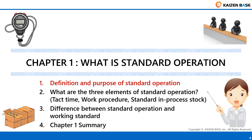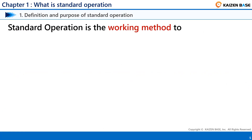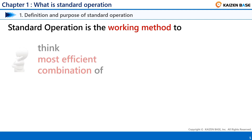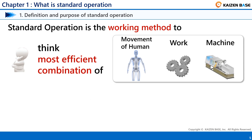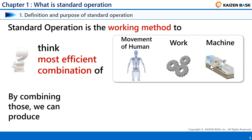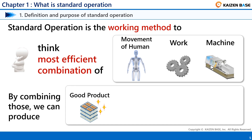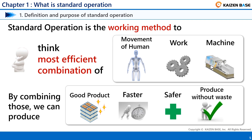The first part is Definition and Purpose of Standard Operation. Standard Operation is the working method to think most efficiently about the combination of movement of human work and machine to produce. By combining those three, we can produce a good product faster, safer, and without waste.